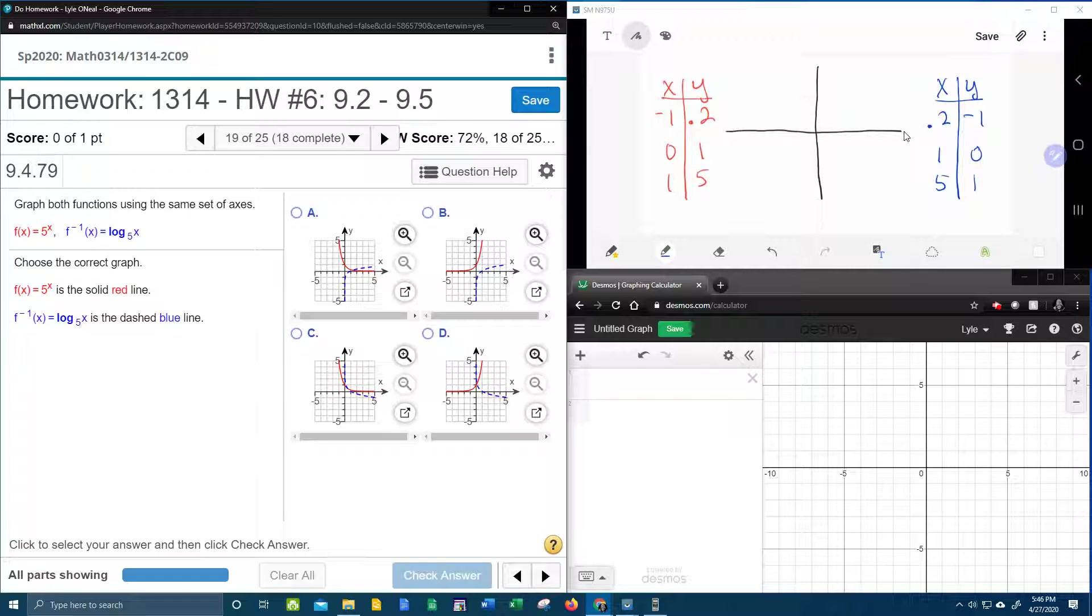And that goes back to a previous problem we did where we found the inverse of a relation, and it says, well, you just switch x and y. So if I want to find the inverse ordered pairs, I simply switch x and y.